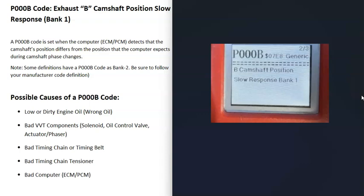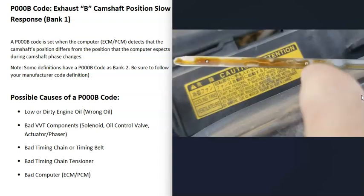What are some possible causes of a P000B code? The first thing that could cause this is low or dirty engine oil. Go check your engine oil — make sure it's at the correct level, it's not low, and it's not really dirty. Also, if the wrong oil was added in for some reason, this can also cause issues, so be sure to check that the correct type was used.